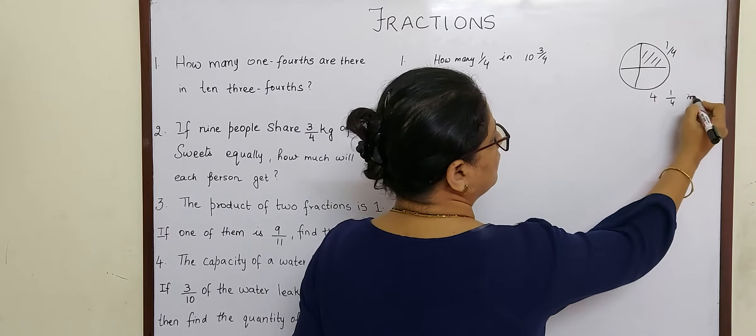So each person will get three-fourths divided by nine. If there is no number in the denominator, put one. When division is replaced by multiplication, the next number becomes its reciprocal, one-by-nine. Three ones are three, three threes are nine, one one is one, four threes are twelve. So our final answer is one-twelfth. Each person will get one-twelfth kg of sweets.